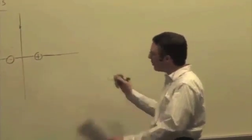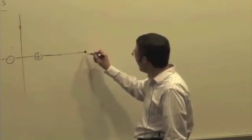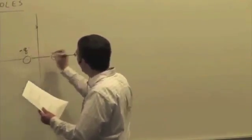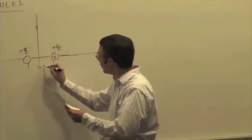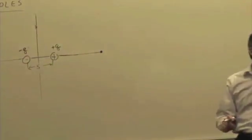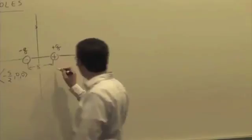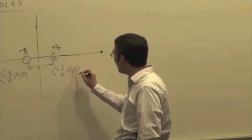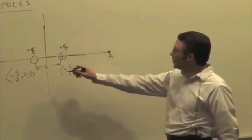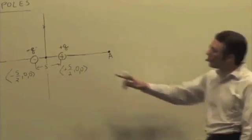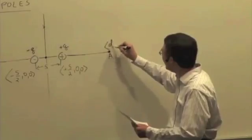Let's calculate a general expression for the electric field of a dipole at a particular observation location on the axis. We have a negative charge minus Q and a positive charge plus Q, with the distance between them called S. The position of the negative charge is (-S/2, 0, 0), the positive charge is at (S/2, 0, 0), and the observation location A is at (D, 0, 0) — a distance D from the origin, right between the two charges.